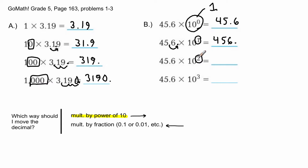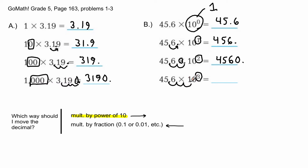For 45.6 × 10², the exponent is two, so I move the decimal two spaces to the right. The empty spot gets a zero, giving 4560. For 45.6 × 10³, I move the decimal three spaces to the right, filling empty spots with zeros, giving 45600.